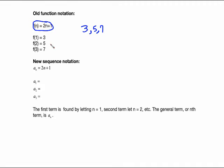Now we convert to sequence notation. Instead of f of n, we use a sub n, and we find the entries a sub 1, a sub 2, a sub 3 by putting 1, 2, 3 in for n. It's the same arithmetic: 2 times 1 is 2, plus 1 is 3. A sub 2 means plug 2 in: 2 times 2 is 4, plus 1 is 5. Plug 3 in: 2 times 3 is 6, plus 1 is 7. And we get the sequence 3, 5, 7.